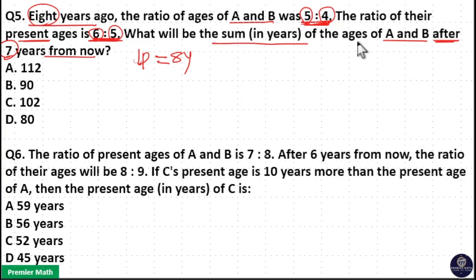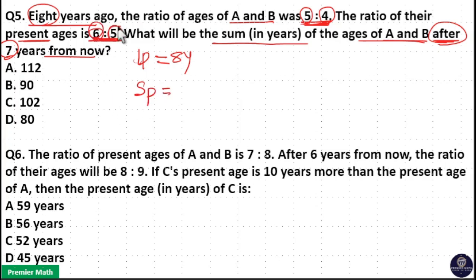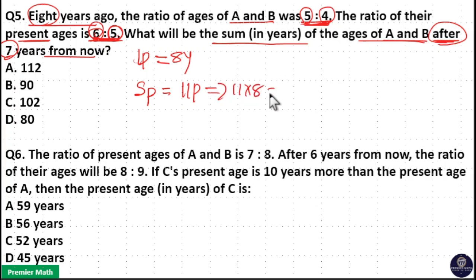We need to find the sum of ages of A and B after 7 years. Before that, we can find the sum of present ages of A and B. The present age ratio is 6 is to 5, so the total sum is equal to 6 plus 5, which is 11 parts. We already know one part is 8 years, so 11 parts equals 11 into 8, which is 88 years.